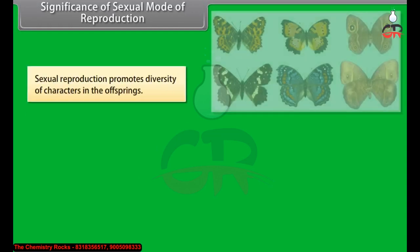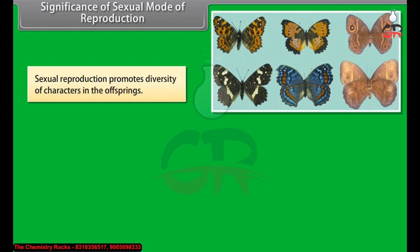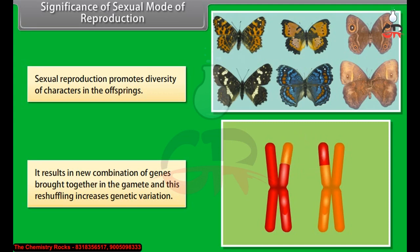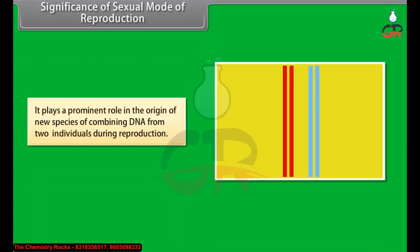Sexual reproduction promotes diversity of characters in the offsprings. It results in new combinations of genes brought together in the gametes, and this reshuffling increases genetic variation. It plays a prominent role in the origin of new species by combining DNA from two individuals during reproduction.